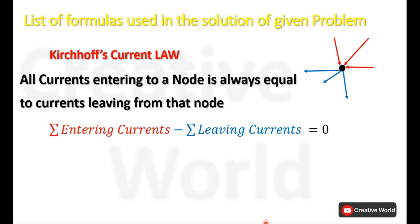While solving this problem, we will be using Kirchhoff's Current Law. According to this law, all currents entering a node are always equal to the currents leaving from that node. The cumulative current on any node in a circuit is always zero. The equation for Kirchhoff's Current Law states that the sum of entering currents minus the sum of leaving currents equals zero.